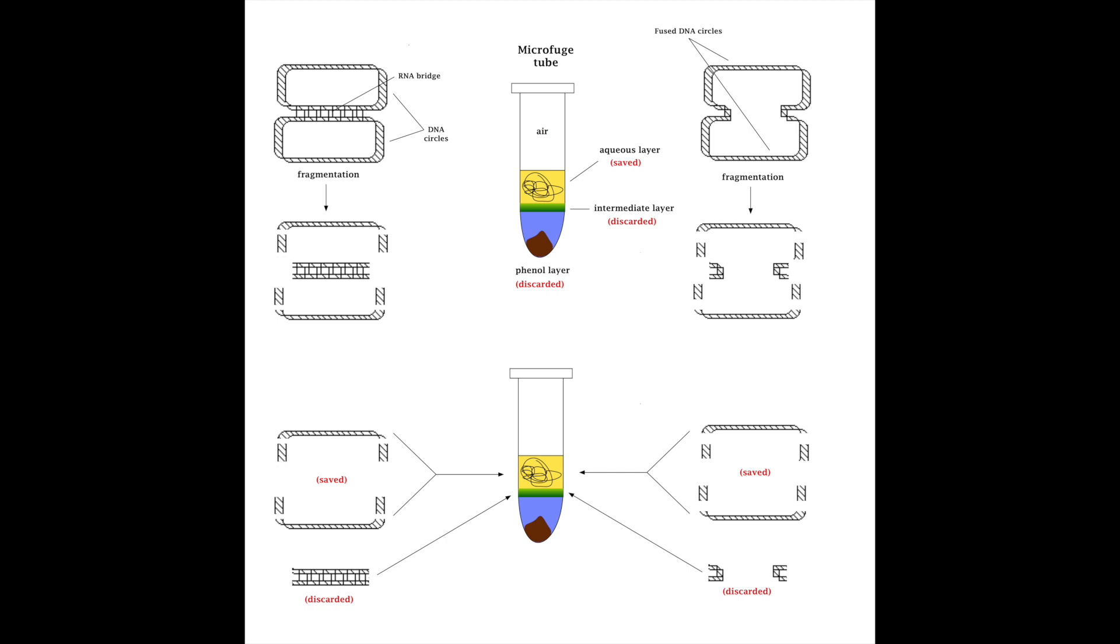If you go straight down, you'll see that they fragment into various things. The connecting points between the two circles remain together and may be intimately associated with covalently bonded RNA and some proteins. They may wind up in that intermediate layer because they may have proteins associated with them. The fragmented DNA will be in the aqueous layer, which is the yellow layer, and it'll be in fragments.